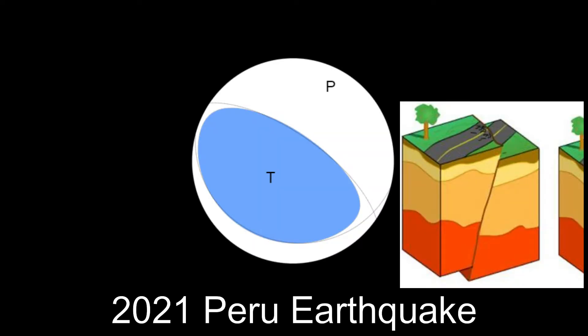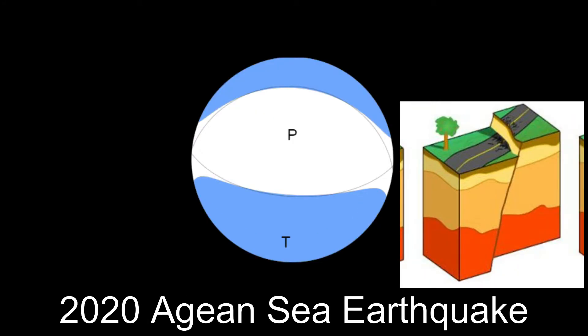Basically, if the blue part is in the middle, it is caused by reverse or thrust faulting or when one crustal block rises over the other. If the middle part is white, it is caused by normal faulting or when one crustal block slides down another.